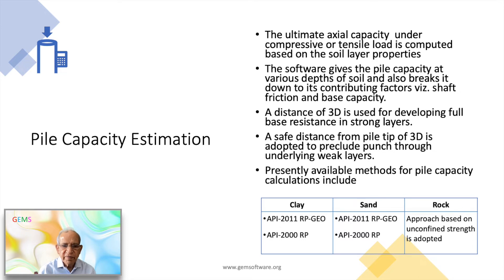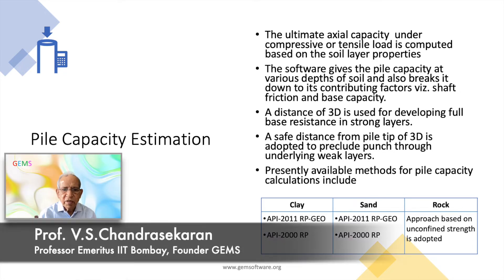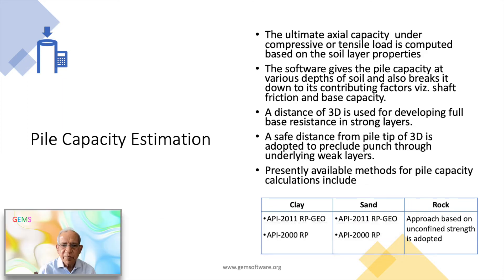All analyses take into account the soil profile and local scour conditions. An embedment requirement of 3D is incorporated for the development of full base resistance, and a minimum cushion of 3D is prescribed above weak layers to avoid punch-through. The axial pile capacity is the sum of shaft friction and base capacity.